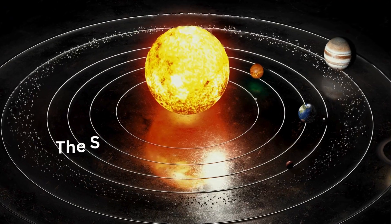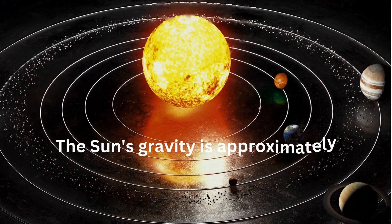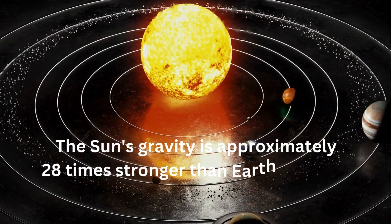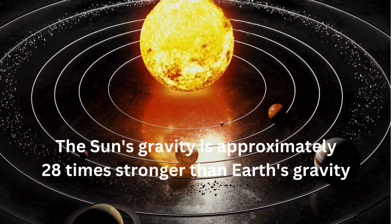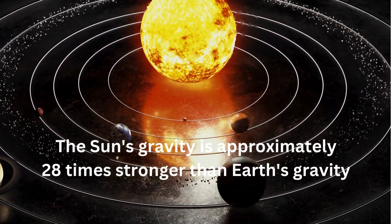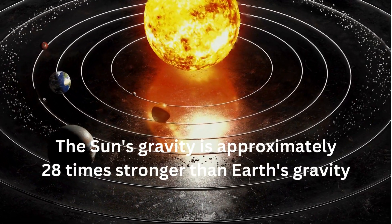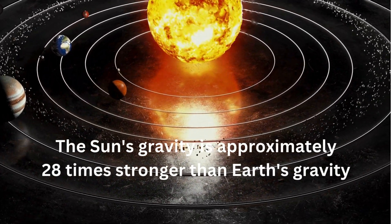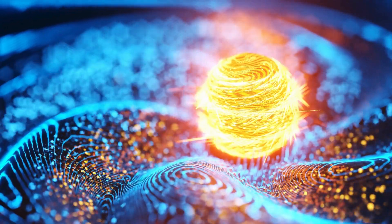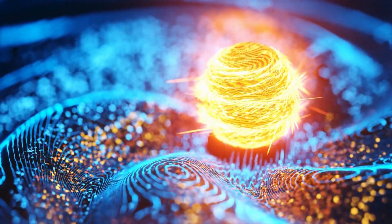Let's get back to time dilation. The sun's gravity is approximately 28 times stronger than Earth's gravity at its surface, meaning if you could stand on the sun, you would weigh roughly 28 times more than you do on Earth. This is due to the sun's significantly larger mass compared to Earth.